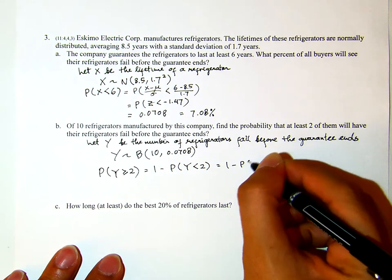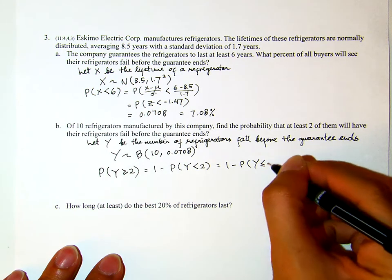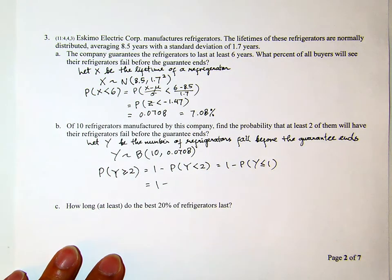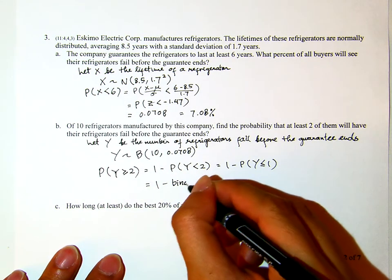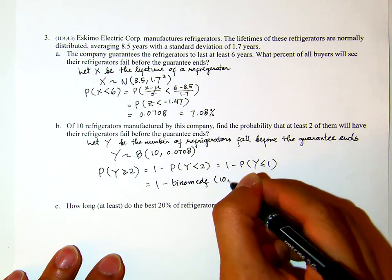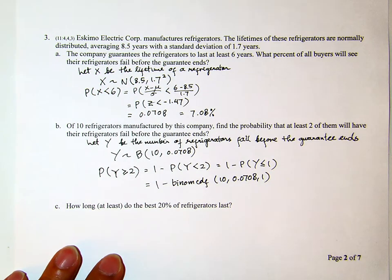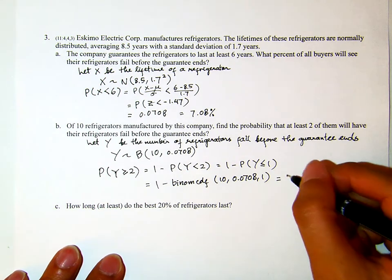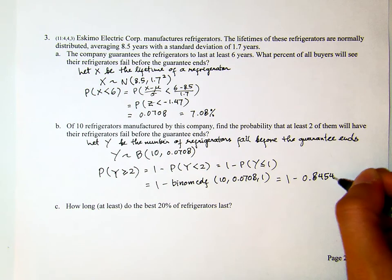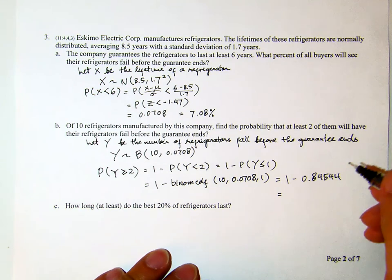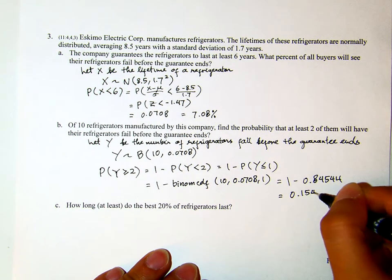Because this is binomial, if it is less than 2 then it will be at most 1. So this is 1 minus, and I'll use the calculator. The coding is BinomCDF(10, 0.0708, 1) — use BinomCDF, not BinomPDF, because this is cumulative. That gives 0.84544, so the result is 1 minus 0.84544, which equals 0.15456.